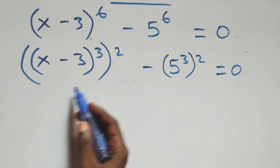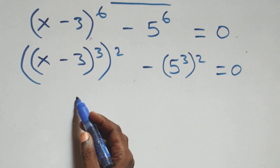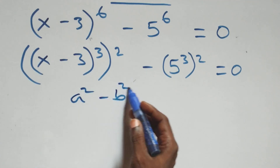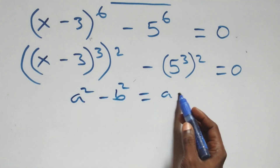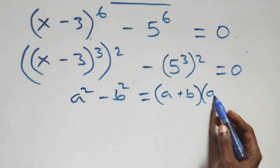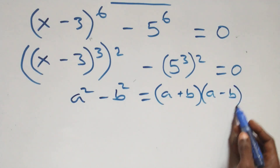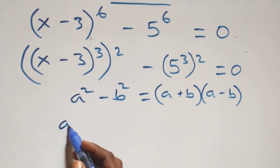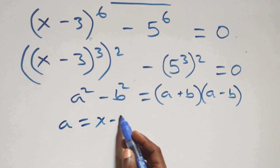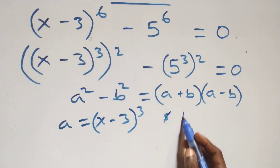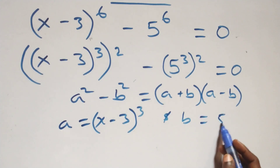At this point, this follows the difference of two squares. We have a squared minus b squared, which is the same thing as a plus b into brackets, then open brackets, a minus b. That is here, a standing as x minus 3 raised to power 3, and b standing as 5 raised to power 3.